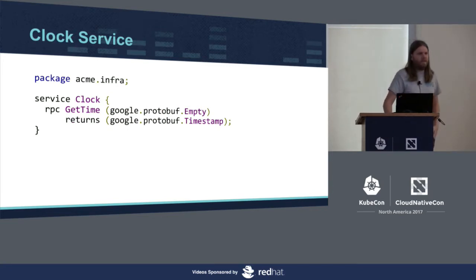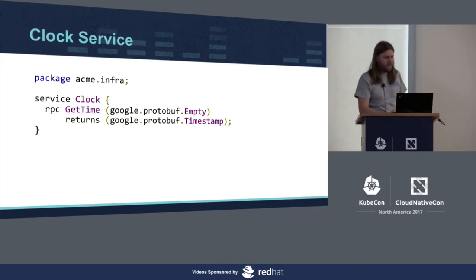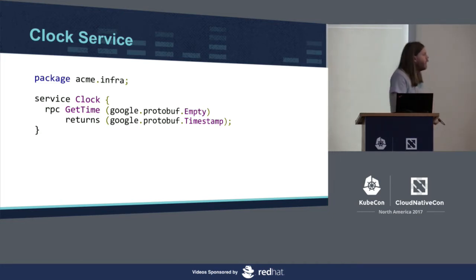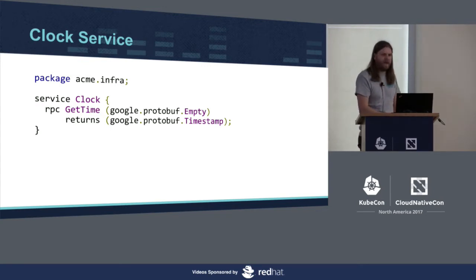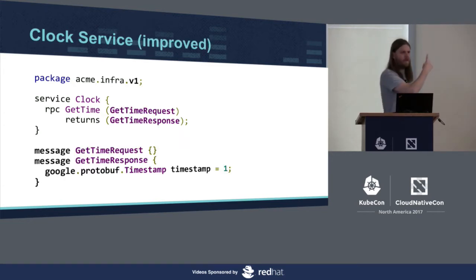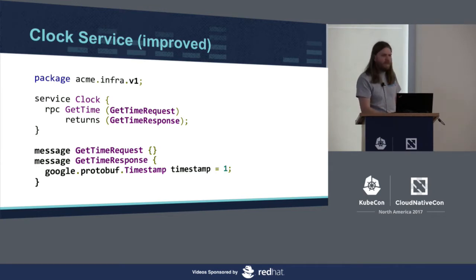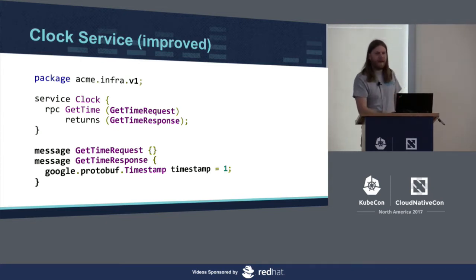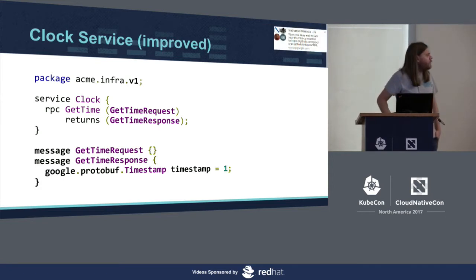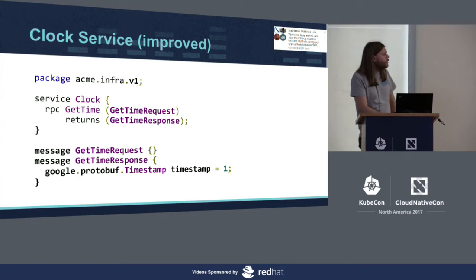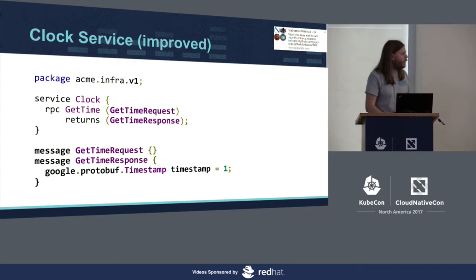Let's say we're in the infrastructure and providing a clock service. You call it with no arguments — that's the empty — and get back a timestamp. You might instead choose to make a request and response message type even for this. It seems boilerplate-y, but it would have been okay if we forgot; we'd just end up having a get_better_time method later. Doing this ahead of time saves that cost, and for users it's not that much harder to use this API.